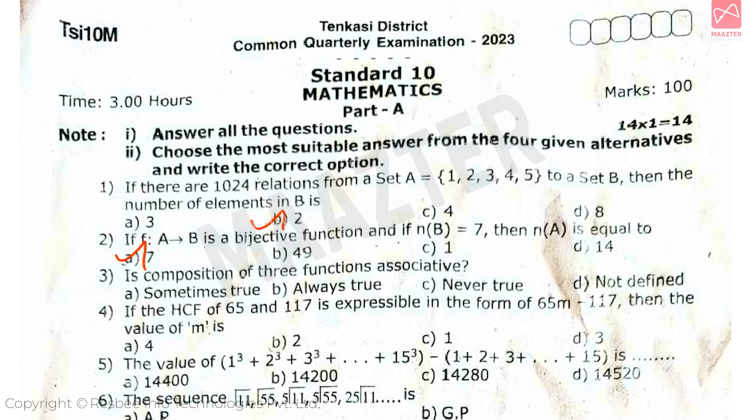Next, is composition of three functions associative? Answer is Option B. Next, if the HCF of 65 and 117 is expressible in the form of 65m - 117, then the value of m is, answer is Option B.